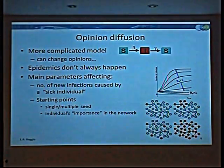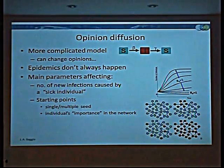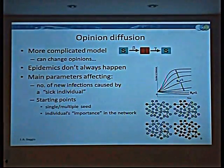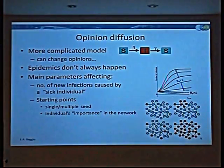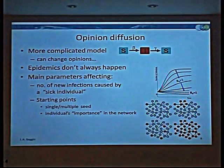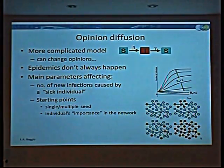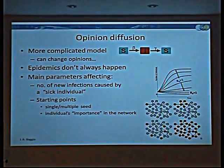My importance on the network is my centrality value — how many connections I have. If I have a lot of connections, I'm central to the network and I'm important. If I have one connection, I'm not important. However, it's not so simple, because if I'm very close to someone who is very connected, then I'm very important, even though that may not be obvious.